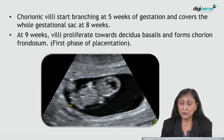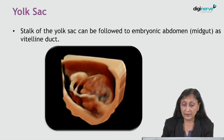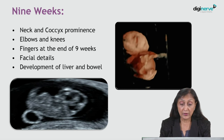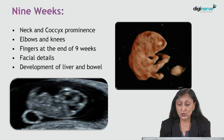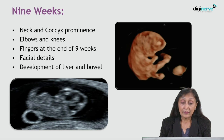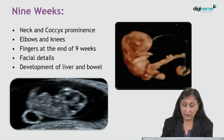At nine weeks, the villi proliferate towards the decidua basalis and form the chorion frondosum — this is the first phase of placentation. The stalk of the yolk sac can be followed to the embryonic abdomen as the midgut via the vitelline duct. The neck and coccyx prominence are clearly visible, and the elbows and knees are formed. Fingers can be seen at the end of nine weeks. Facial details are also appreciated at this time, and development of the liver and bowel can be documented.